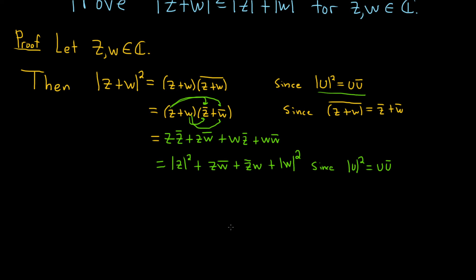Now we want to use another identity. There's something that tells us that two times the real part of a complex number z is equal to the complex number plus the conjugate of the complex number. We need to somehow write these inner terms as a complex number and its conjugate.